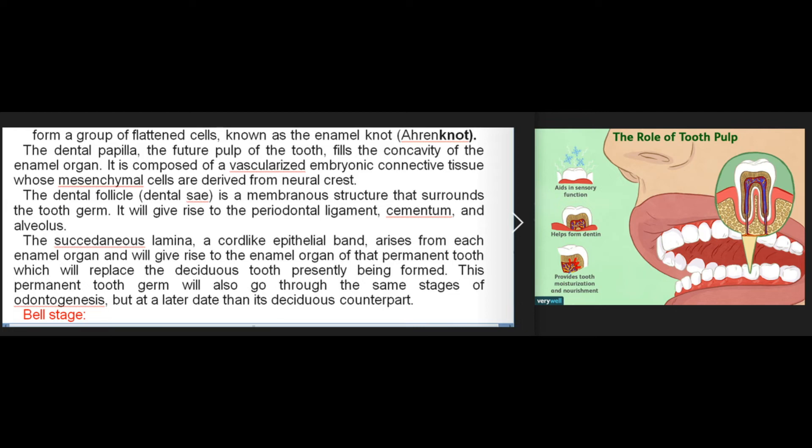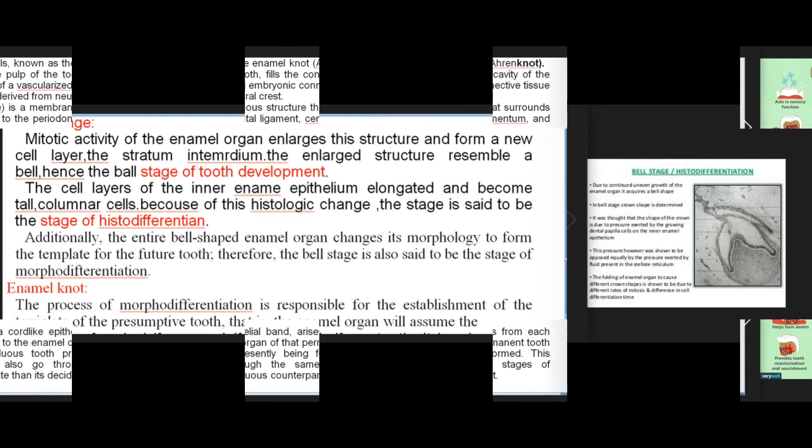The successional lamina, a cord-like epithelial band, arises from each enamel organ and will give rise to the enamel organ of that permanent tooth which will replace the deciduous tooth presently being formed. This permanent tooth germ will also go through the same stages of odontogenesis but at a later date than its deciduous counterpart.